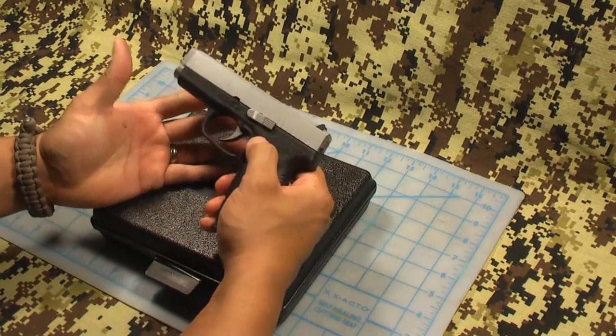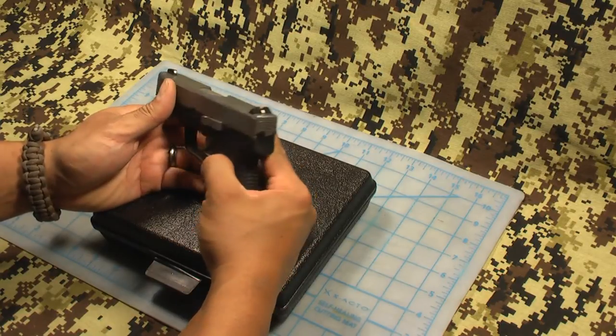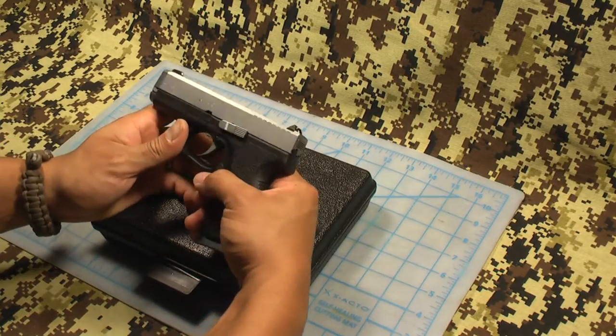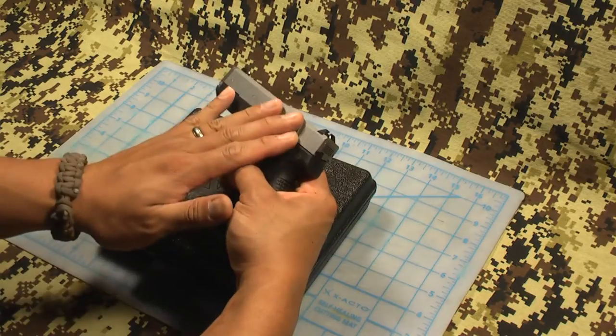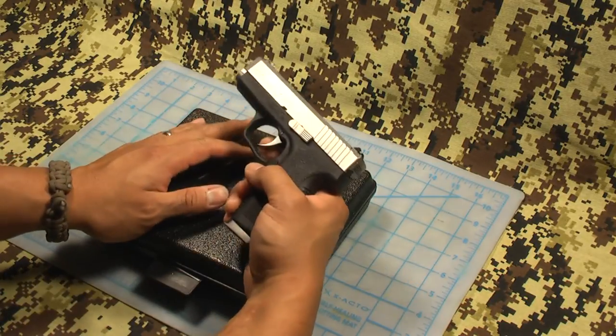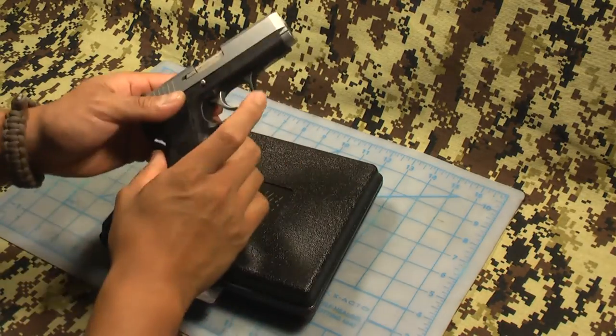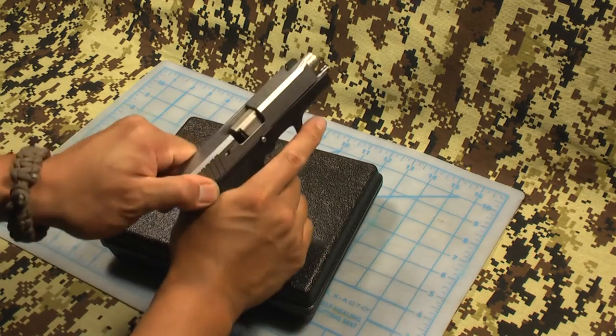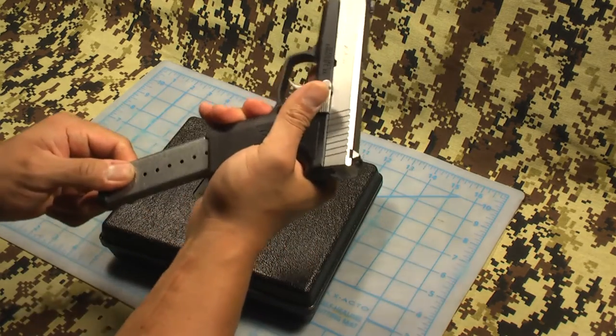It has no external safeties. I believe there is a firing pin block so that the firing pin will only drop if the trigger is pulled back. It has a pretty heavy trigger. It is clear, nothing in the chamber, nothing in the magazine.